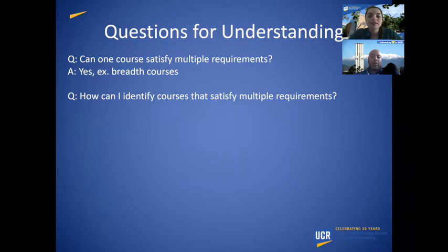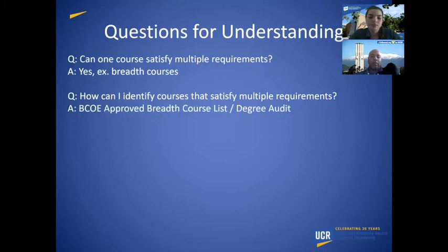How can I identify courses that satisfy multiple requirements? The first place you can look is the BC approved breadth course list. You can also look on your degree audit, and the last place you can look is the schedule of classes.